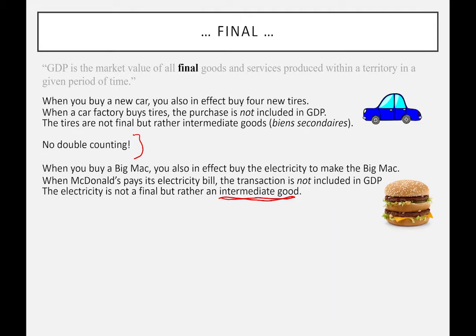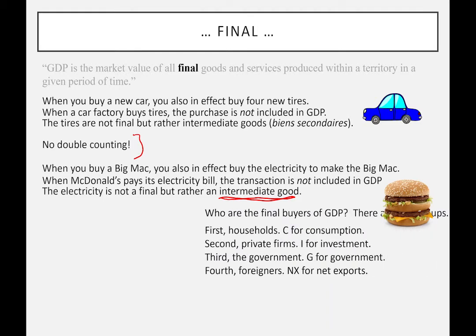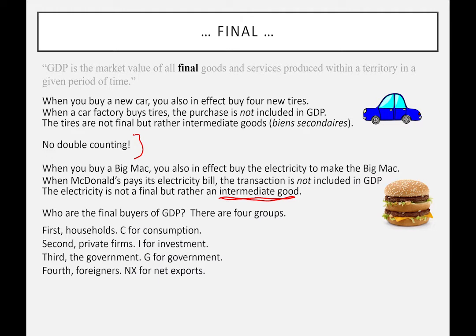When is there a final transaction? Following Keynesian theory, there are basically four groups. First, Canadian households purchasing something — that's consumption, represented by the letter C. Second, when a firm purchases something for investment — for example, McDonald's building a new restaurant or installing new software — that's included in GDP, represented by I. Third, when the government buys something on our behalf, represented by G. Fourth, when a foreigner comes to Canada and purchases something, that's net exports, represented by NX. Remember C, I, G, and NX as the four major components of gross domestic product.